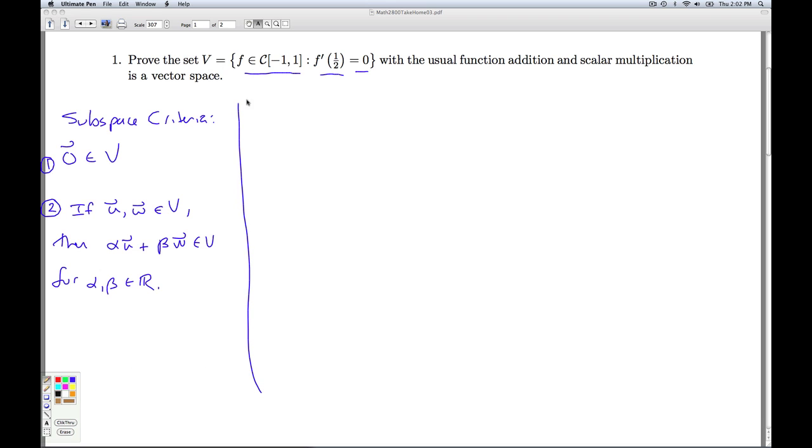So for this set, the zero vector is none other than the function f(x) = 0. f(x) = 0 is differentiable. Its derivative is 0, and that's for all x. So in particular, at 1/2, it's 0. This tells us that the zero vector is in V. So that satisfies condition 1.